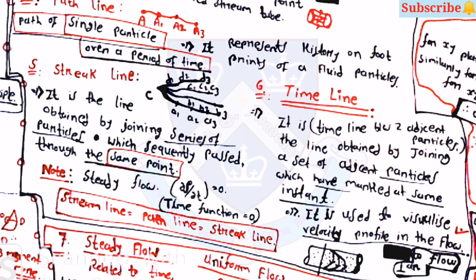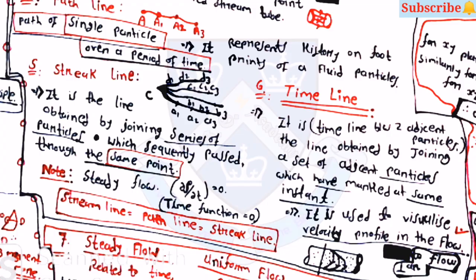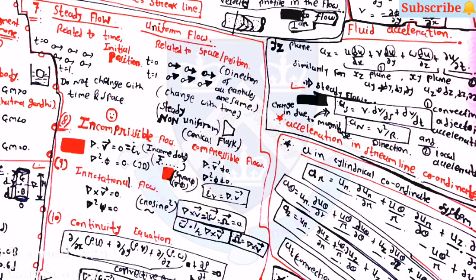A timeline is the line obtained by joining a set of adjacent particles marked at the same instant, and it is used to visualize the velocity profile in the flow. For steady flow, it is related to time and initial position. Uniform flow is related to space and position.